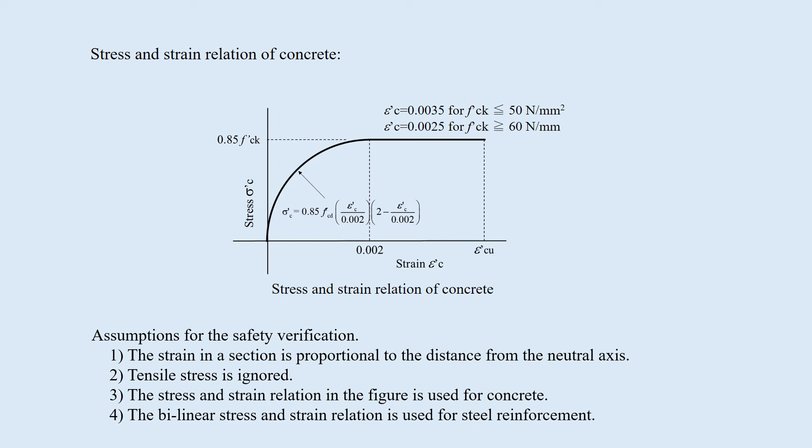The four assumptions are: 1) The strain in a section is proportional to the distance from the neutral axis. 2) Tensile stress is ignored. 3) The stress and strain relation shown in the figure is used for concrete. 4) The bilinear stress and strain relation is used for steel reinforcement.